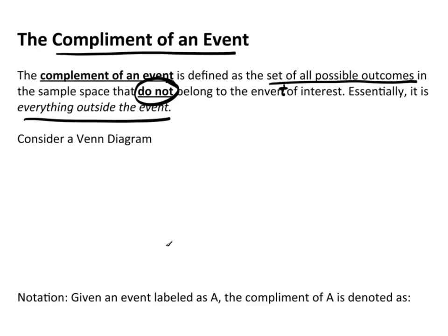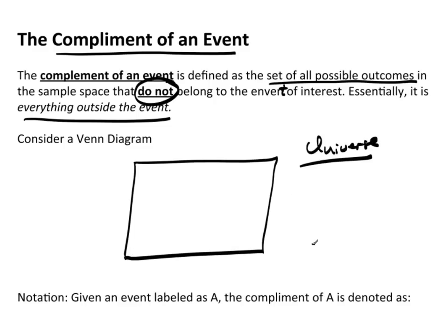Now, this may make more sense if we do a Venn diagram. So this box represents the entire universe. This is my universe. And inside this universe, I have an event that I'm going to call event A. So if event A happens, that means it's inside here. Well, what is outside of A?